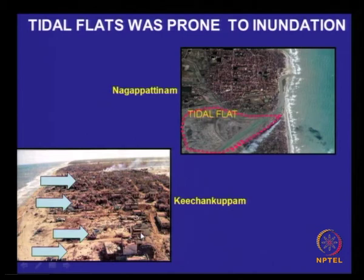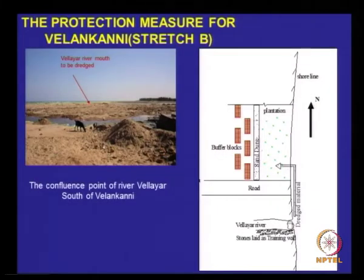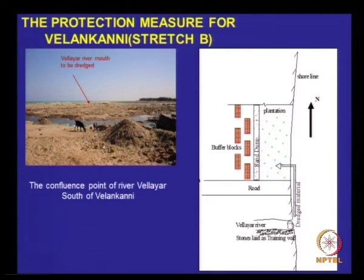This area called Kichang Kuppam was very badly destroyed — about 300 people lost their lives. We have suggested some remedial measures. Another area around the same location is Valangani, where the famous Velankanni church is located. Somewhere here is the church, and there is a lot of inundation here.